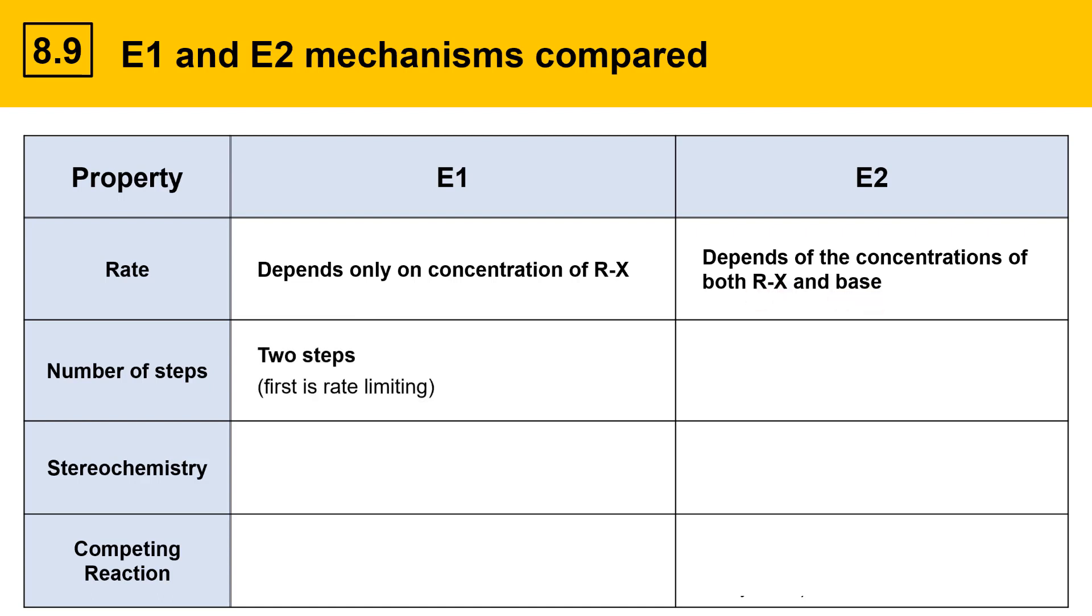In terms of number of steps, the E1 reaction is two steps, with the first being rate-limiting. The E2 reaction is one step. It's a concerted reaction. All the bond-breaking and forming happens in one step.